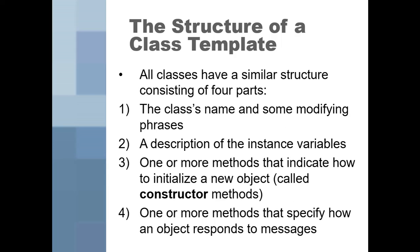Here's the structure of a class that we're going to be consistently making. We're going to have a class name and some modifying phrases. We're going to give it some instance variables — variables stored inside that class. Some methods that indicate how to initialize a new object, called constructors. And then one or more methods to specify how an object responds to messages, like how to change a name.